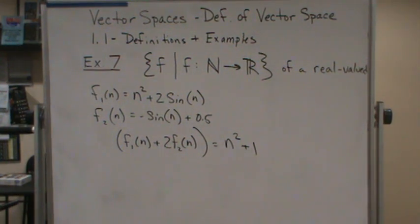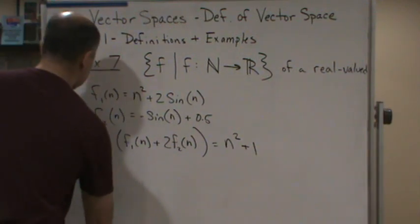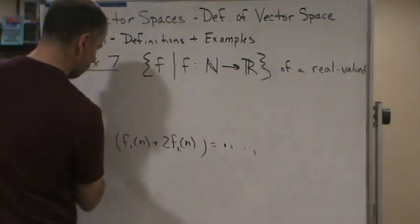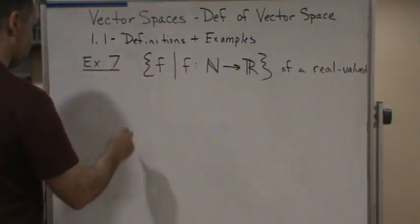There's the final answer. We can also view this space as a generalization of the example we saw with the two-tall vectors back a few videos ago, because we can write a table of values.